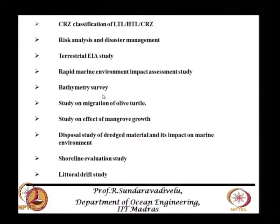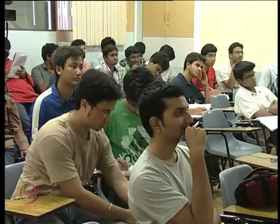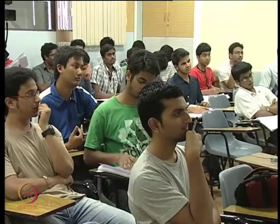We have to do a bathymetry survey to find out the depth of water. Then the migration of olive ridley turtles — where are they migrating in India? There are certain locations, mainly on the Orissa coast. The correct location is the Adair estuary where olive turtles come, mostly on the river bed near the Rushikulia river. Olive turtles lay eggs in hundreds. Nature gives them enough protection, but this has to be protected.